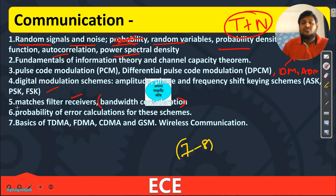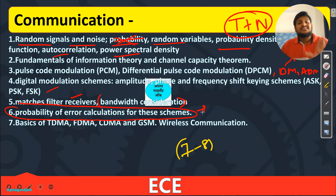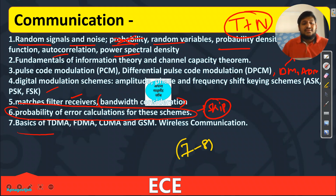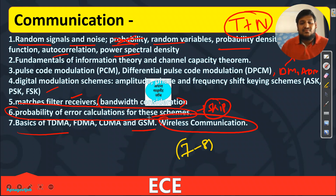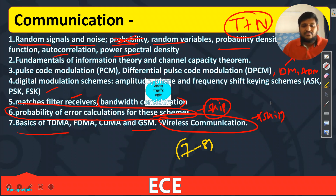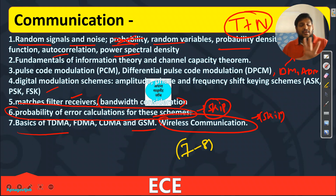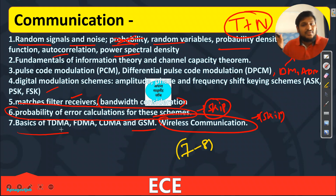For phase 2, skip the detailed probability of error calculation for ASK/FSK/PSK schemes — keep that for later. For TDMA, FDMA, CDMA, and GSM basics, you will do those. We will skip wireless communication topics like Bluetooth, Wi-Fi for now — not required basically at this stage.